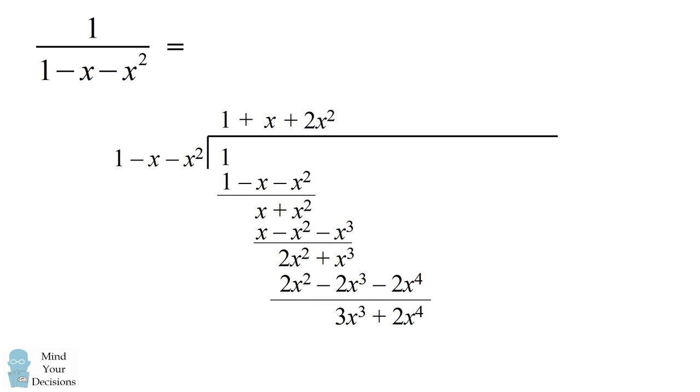Subtracting that out, we have 3x-cubed plus 2x-to-the-fourth. So our next term will be plus 3x-to-the-cubed to eliminate the 3x-cubed. When we do that subtraction, we end up with 5x-to-the-fourth plus 3x-to-the-fifth. So our next term will be 5x-to-the-fourth.